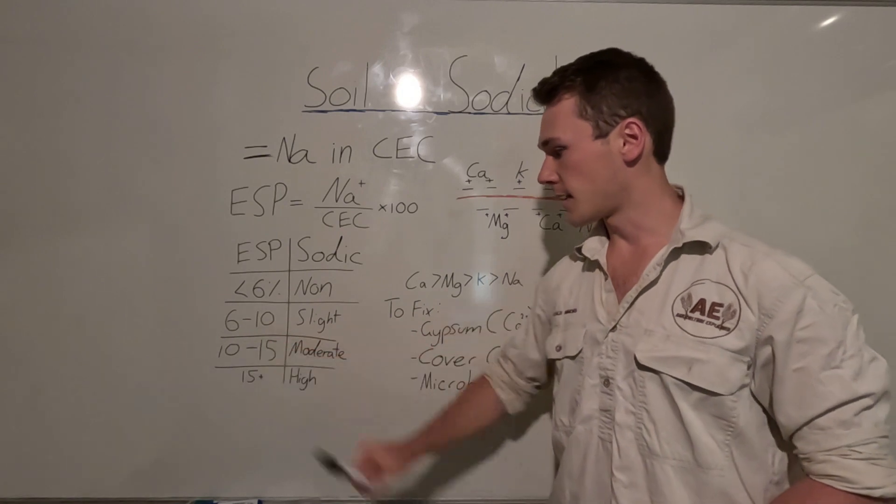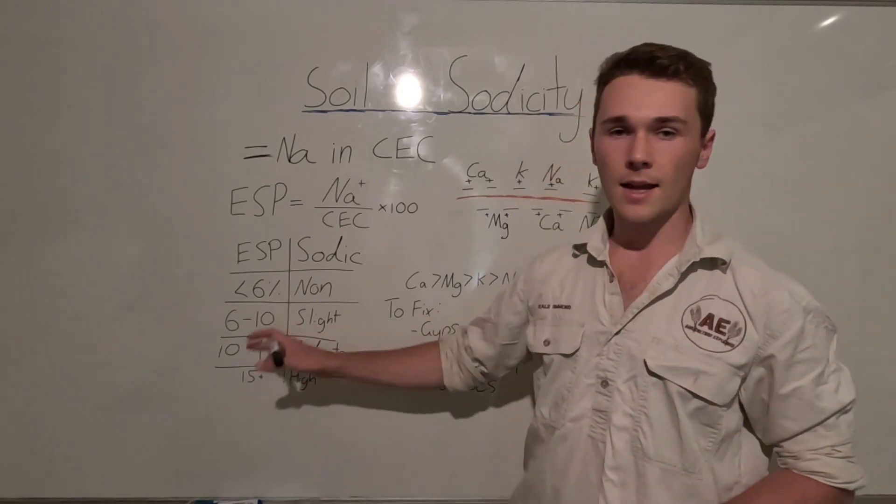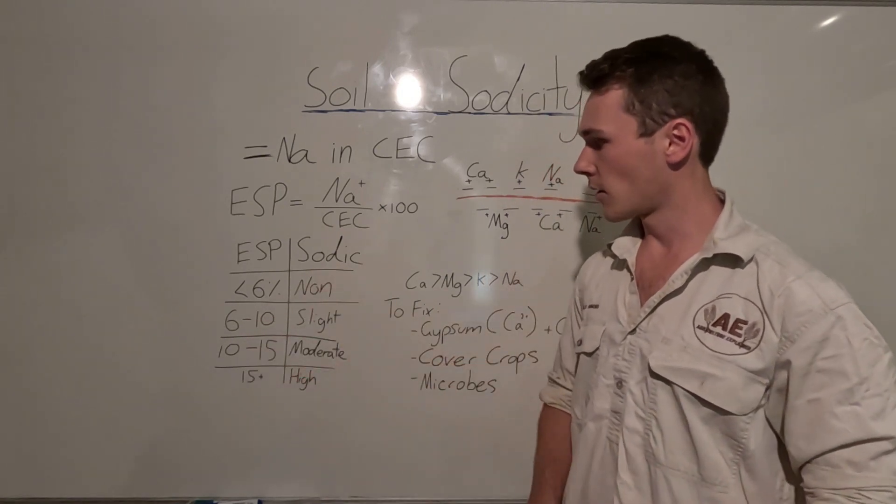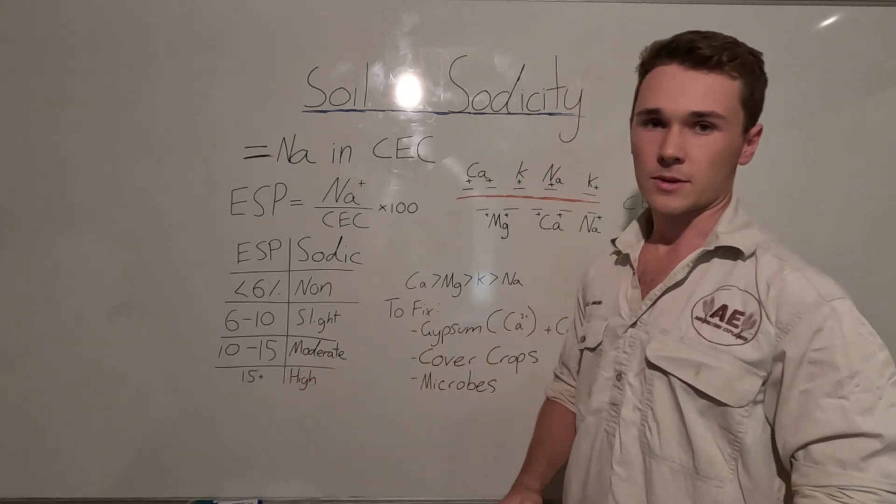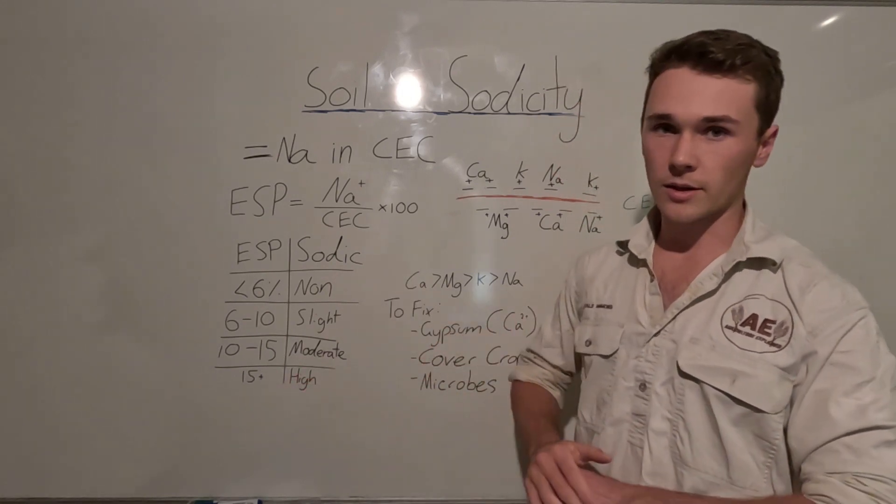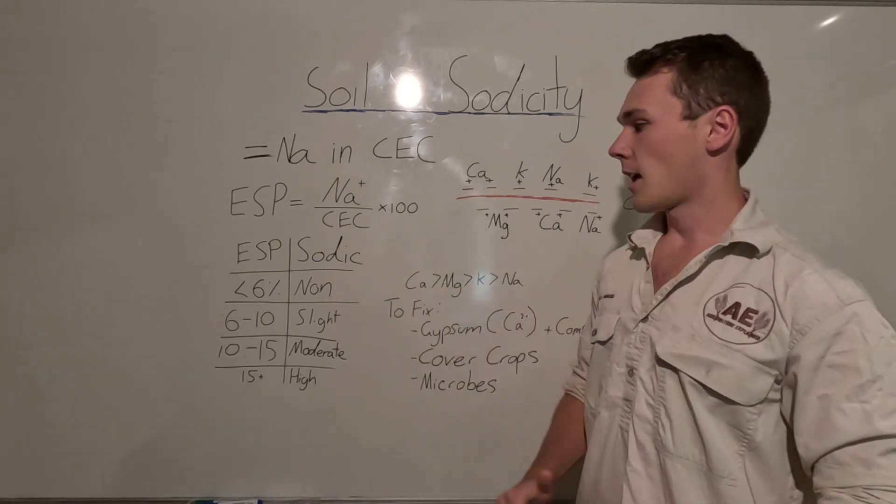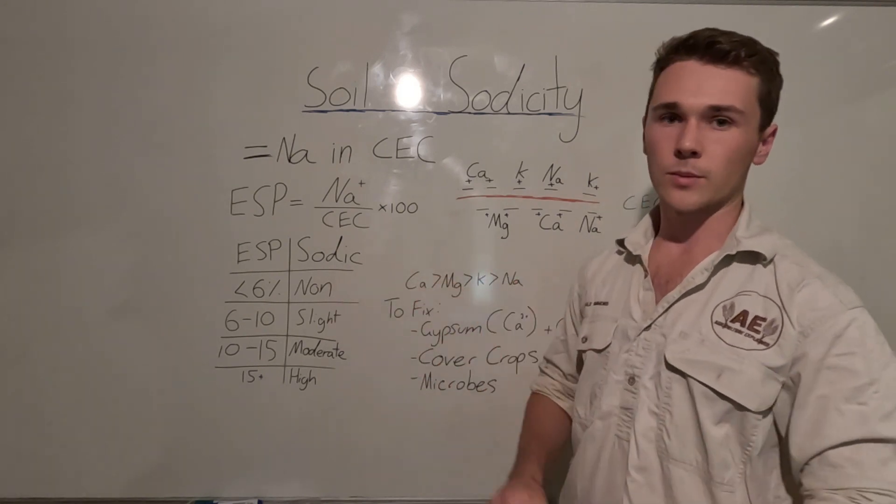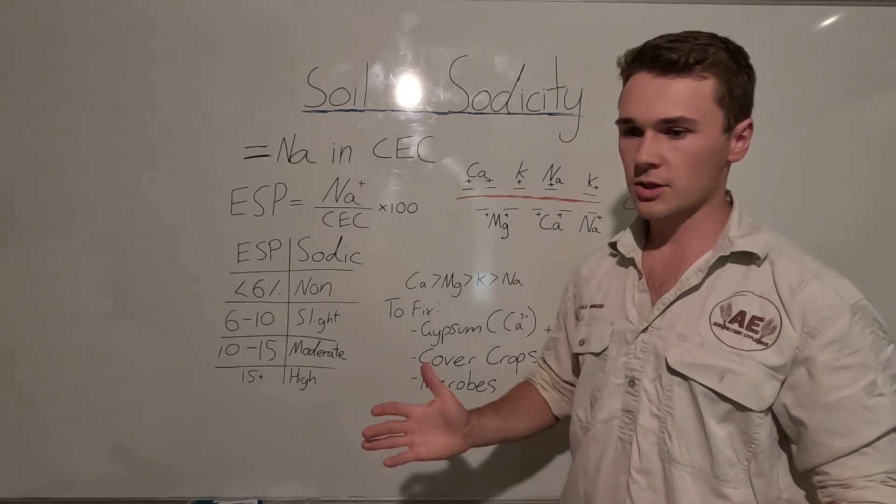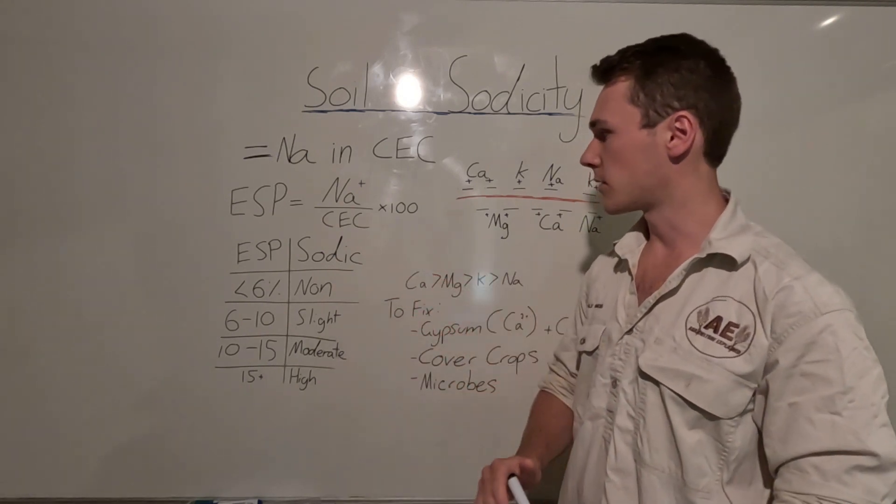If they're between 6 and 10, that's slightly sodic. 10 and 15, that's moderately sodic, and then greater than 15% is highly sodic. So really you don't want anything above the 6%, and keeping it below 6% will give us optimal production in terms of what sodicity is concerned.